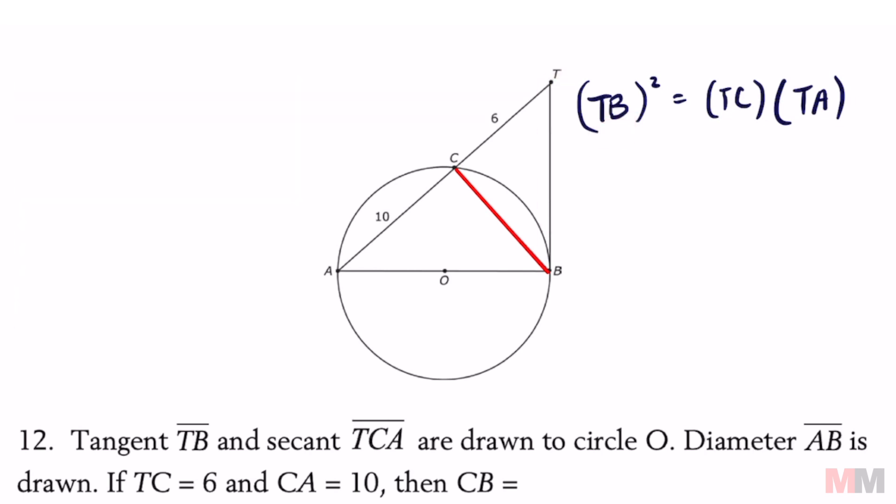Let's go ahead and fill in what we know. TC equals 6, and TA is the combination of these two line segments. So all you got to do is add these up. 6 times 16 equals TB squared. So don't multiply these out. There's a small shortcut you can take to find TB. If I square root TB squared, then I have to square root 6 times 16, and it makes it easy because this one is a perfect square. So that's going to get me TB equals 4 root 6.